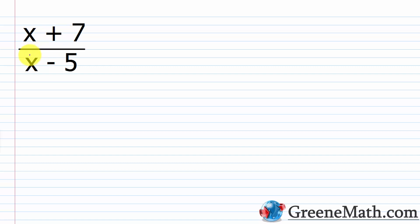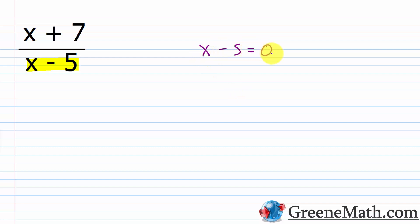If I had a rational expression like (x + 7) over (x − 5), what would be my restricted value? It's anything that makes the denominator zero. If I look at my denominator, it is x − 5. To find the value for x that makes this denominator zero, all I need to do is set my denominator equal to zero and solve. So I just add 5 to each side of the equation.